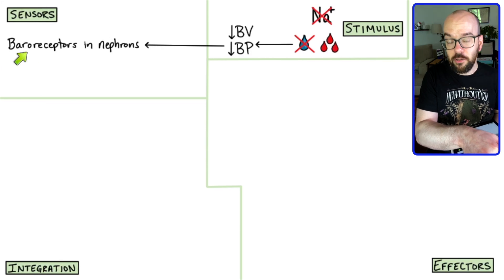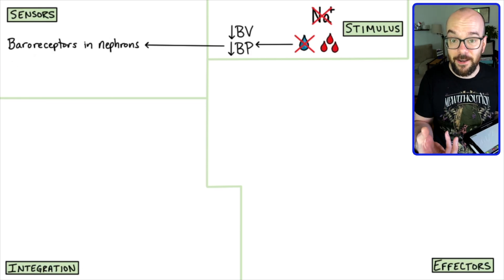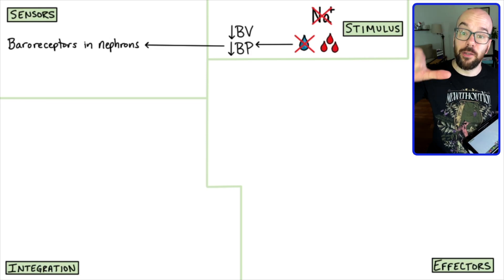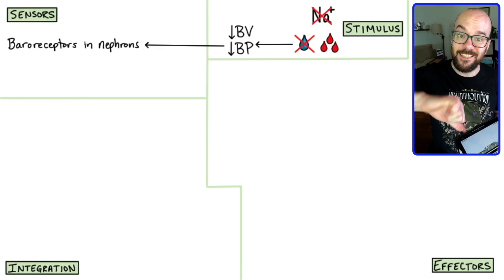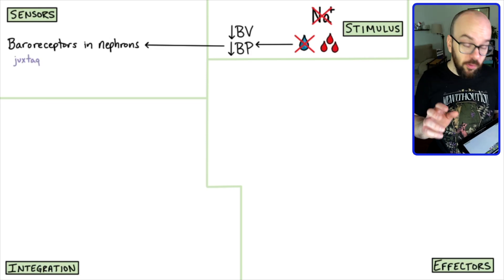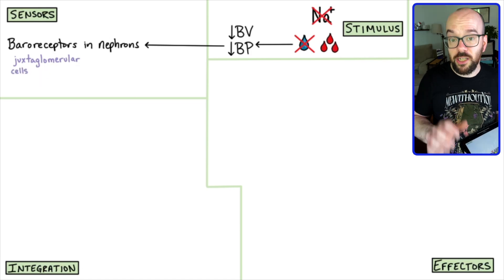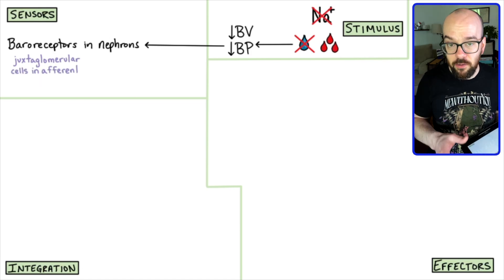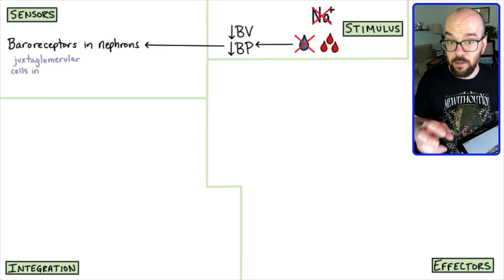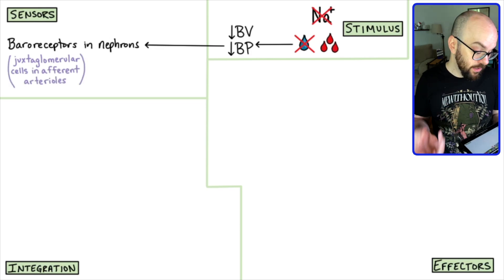Baro means pressure, and receptor means it's going to sense that. These baroreceptors will sense that the blood pressure has decreased. Those are in the nephrons, and more specifically in the juxtaglomerular cells in the afferent arterioles.